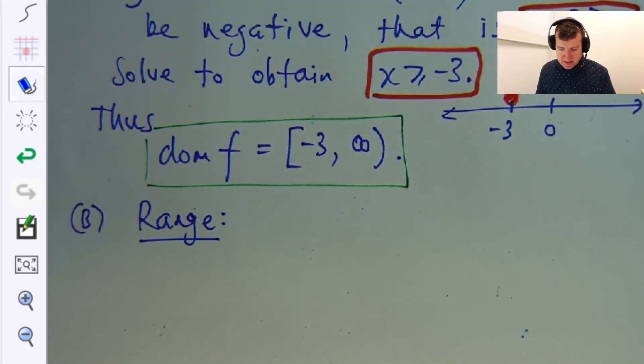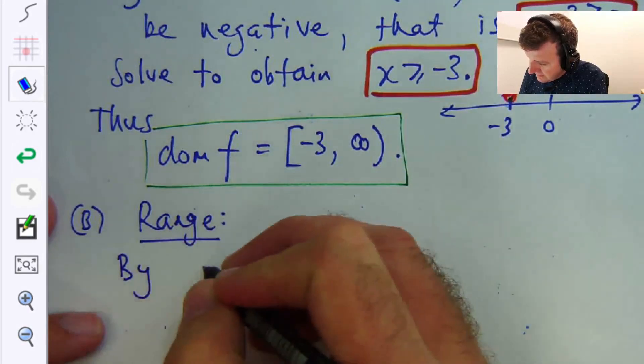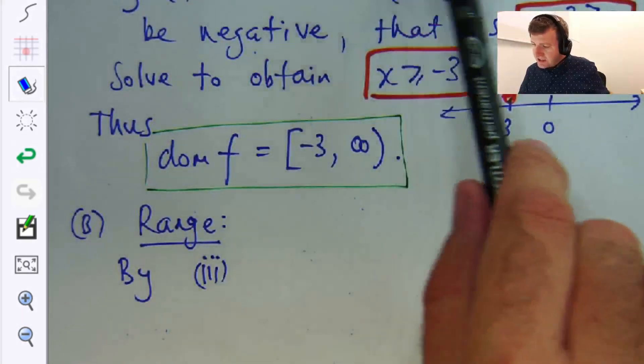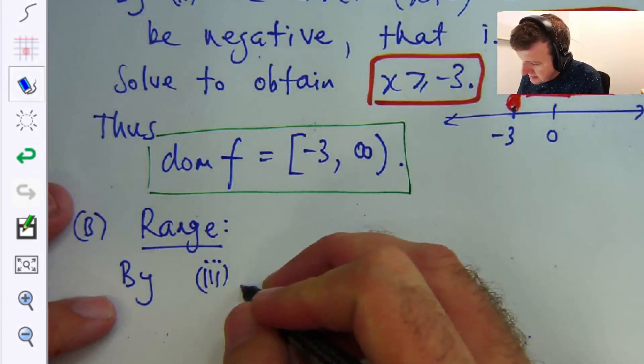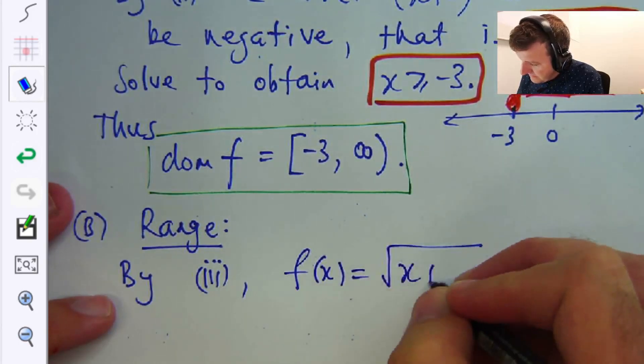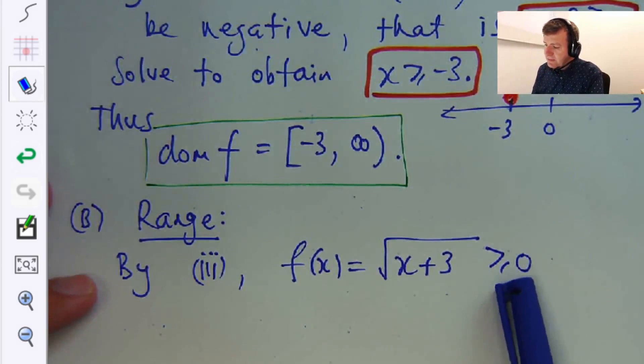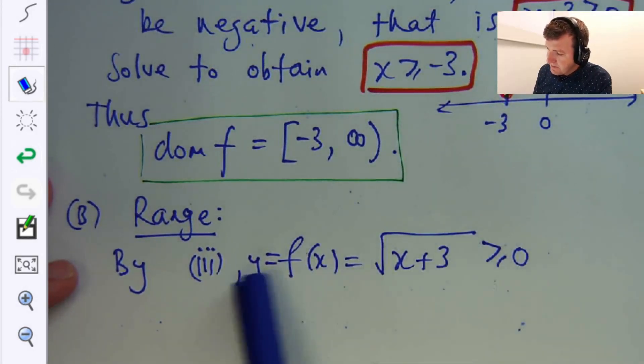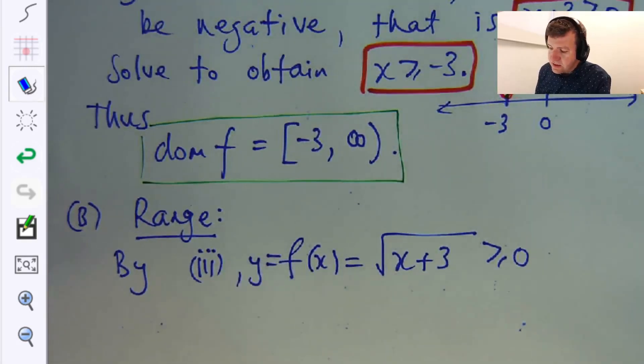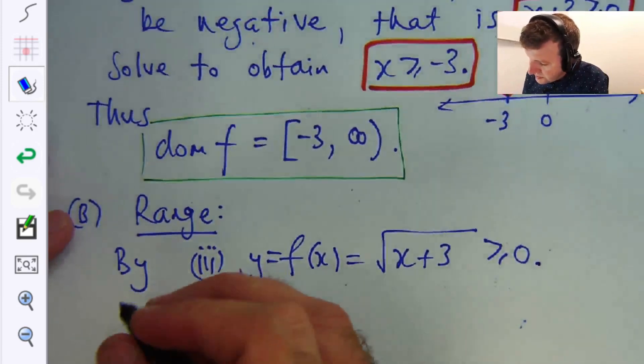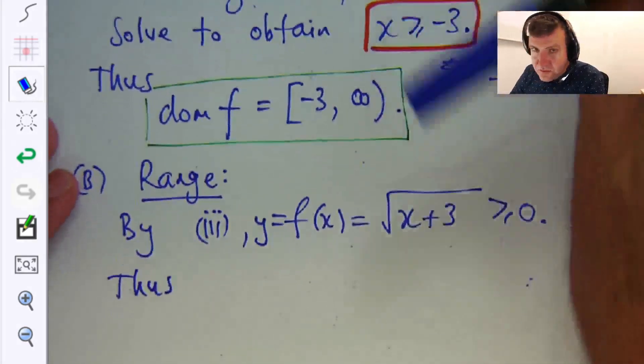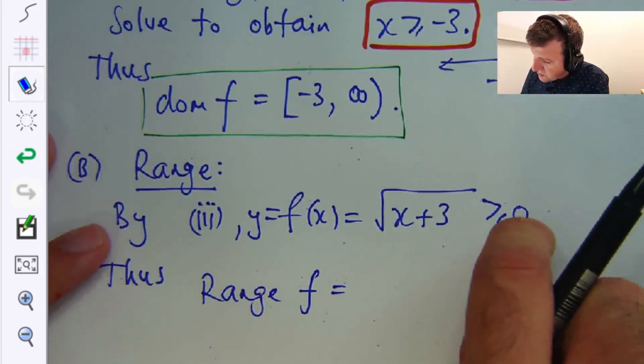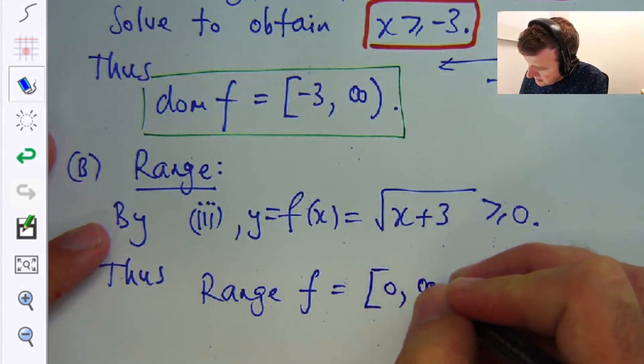All right, so let's talk about the range now. So by top tip three, square roots can't be negative, and this is a square root type function. So for every x in the domain, the output, if you like y, is always greater than or equal to zero. So now we've got another inequality for y: y ≥ 0. We don't need to solve that. So all we can do is write down the interval now. So the range of f is just the interval from everything that's greater than or equal to zero. So this is this interval now.